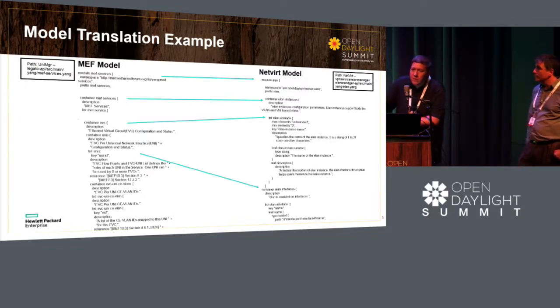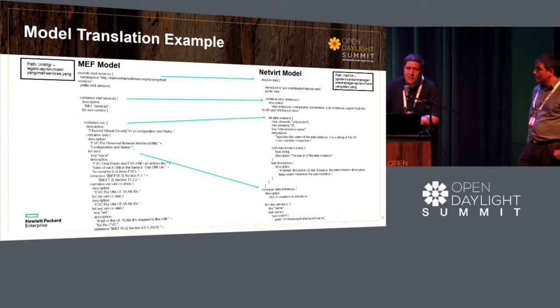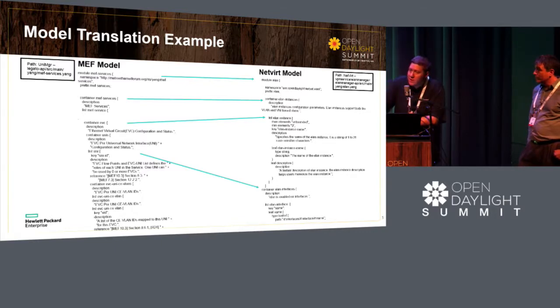Instead of having to implement all the network capabilities, we just have a thin application which translates the API we want to export — in our case the MEF API — and translates it into NetVirt's API, which then creates all the networking.